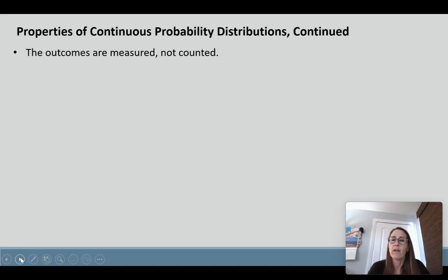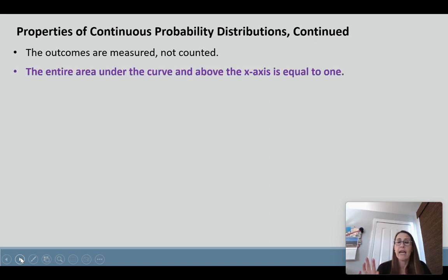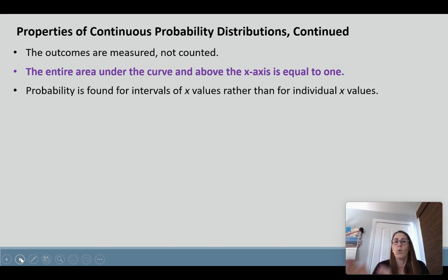When we're talking about continuous probability distributions, again, our outcomes are measured, not counted. The entire area under the curve and above the x-axis is equal to 1, so all of the area underneath that equation, that curve, is equal to 1. We find our probability for intervals of x values rather than for individual x values, because again, because it's continuous, you have to look at an interval versus discrete, where you would just look at specific values.